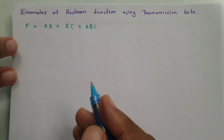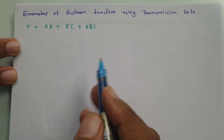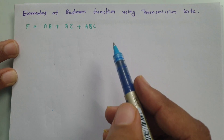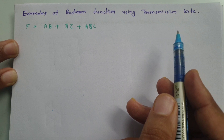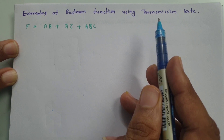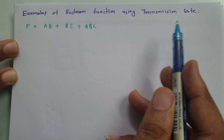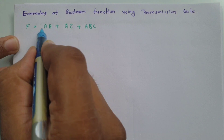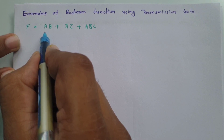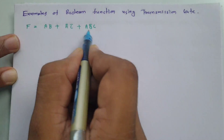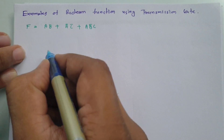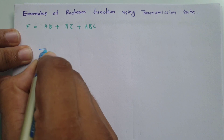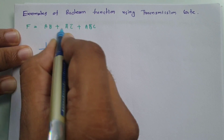You should first know what a transmission gate is — I have explained it in my previous video on multiplexer implementation using transmission gate, so please go through it for a clear idea. Here I will be using it directly. Observing this Boolean function, there are three product terms, so we should have three transmission gates. Let me draw three transmission gates for the three products.